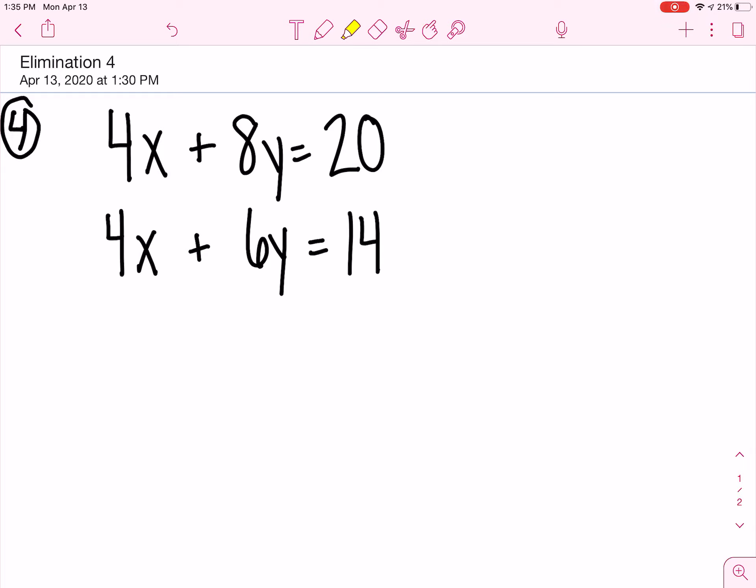We put our two equations on top of each other, and now let's go look for opposites. We have 4x and 4x. These are both positive, so no, they are not opposites. Then we have a positive 8y and a positive 6y, so currently, right now, we do not have opposites, so we need to make an opposite.